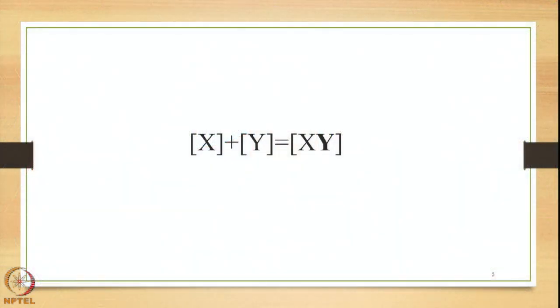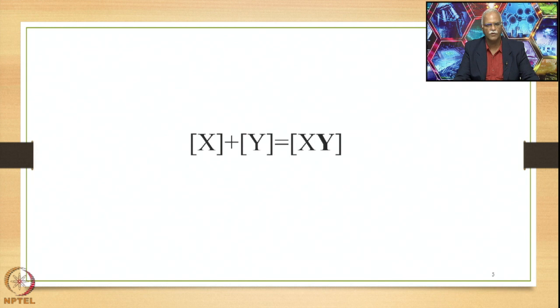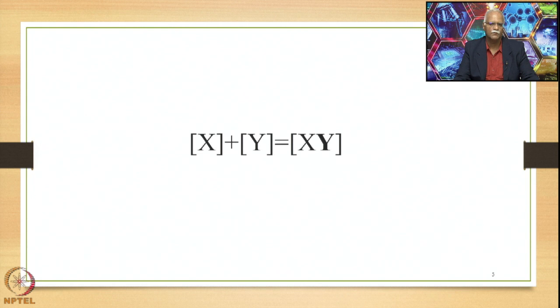The derivation of the Tatpurusha Samasa can be summed up in brief in the form of an equation mentioned on this particular slide. Here you have X and Y as the two constituents — independent and separate in terms of meaning, word form, and accent. X has a different meaning, Y has a different meaning, and both have different word forms and different accents. But they are semantically related to each other, and so the speaker of Sanskrit decides to merge them together and generate an output in the form of XY, which is now one unit.